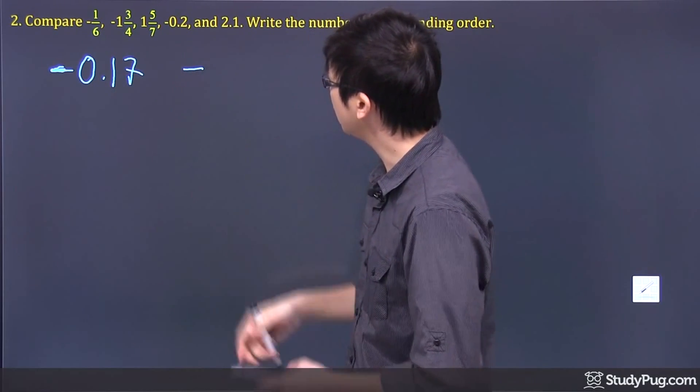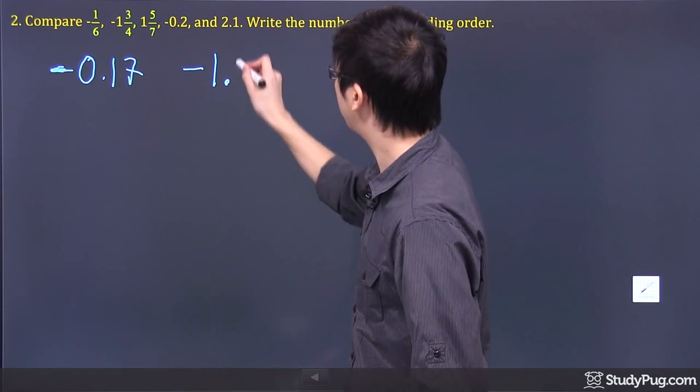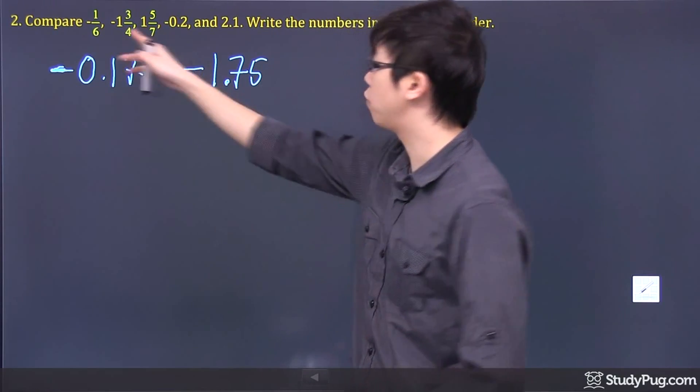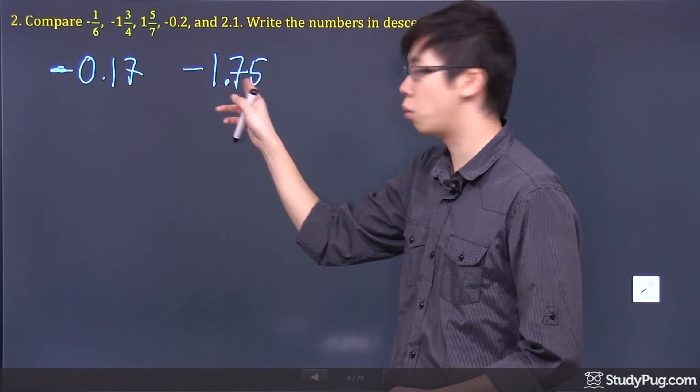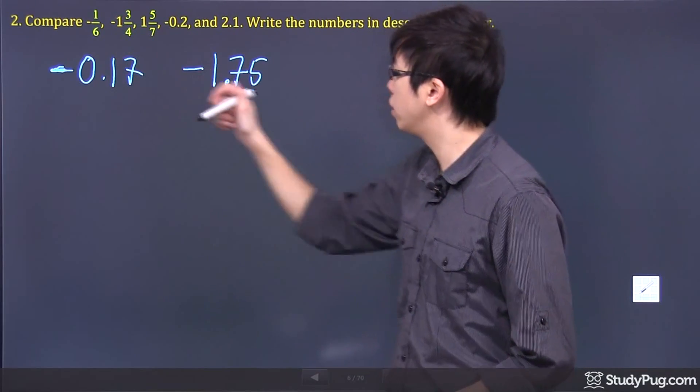The next one we have is negative. That looks like a 1 and 0.75. If you punch in the calculator, punch in 3 over 4, you get 0.75 and just add a 1 to that.